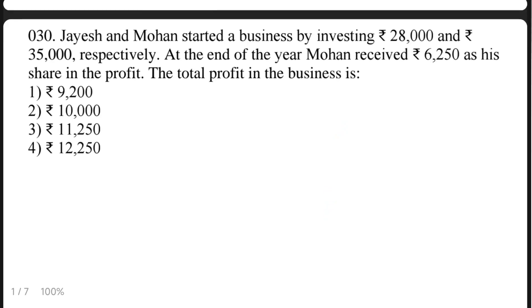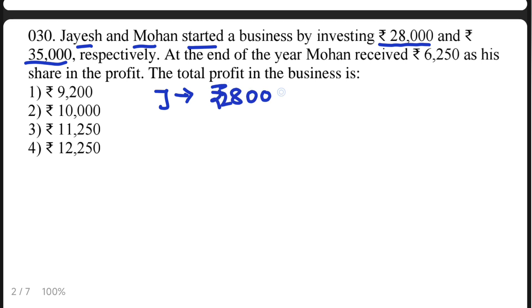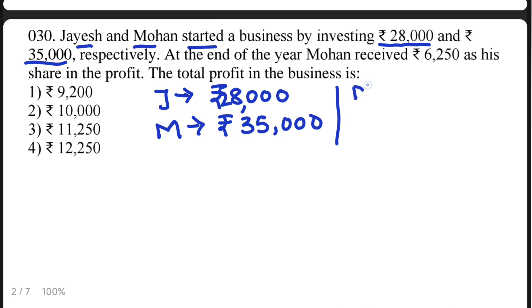The first question: Jayesh and Mohan started a business by investing 28,000 rupees and 35,000 rupees respectively. At the end of the year, Mohan received 6,250 rupees as his share in the profit. The question asks: what is the total profit in the business?